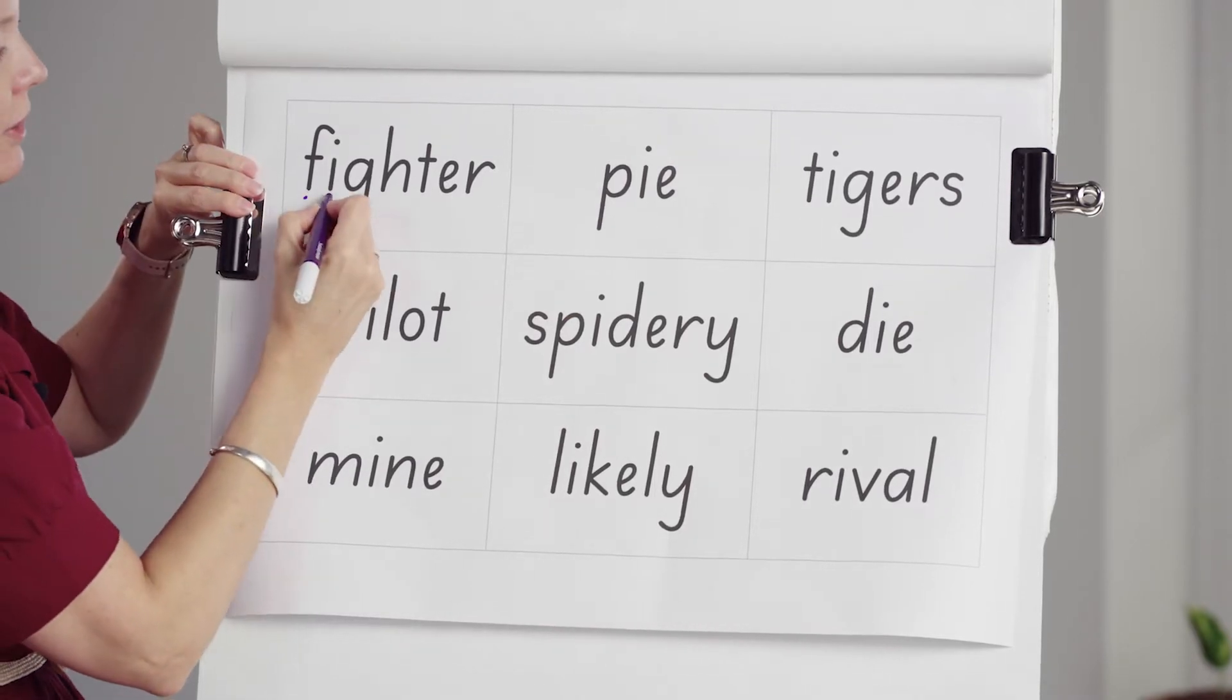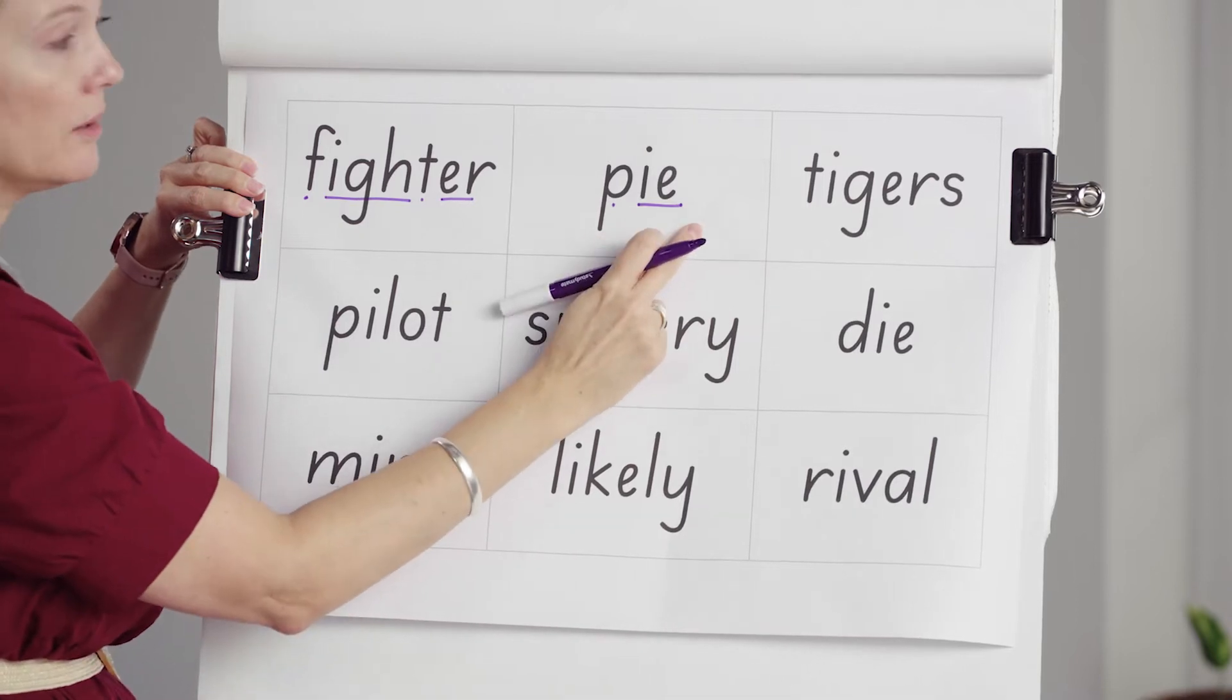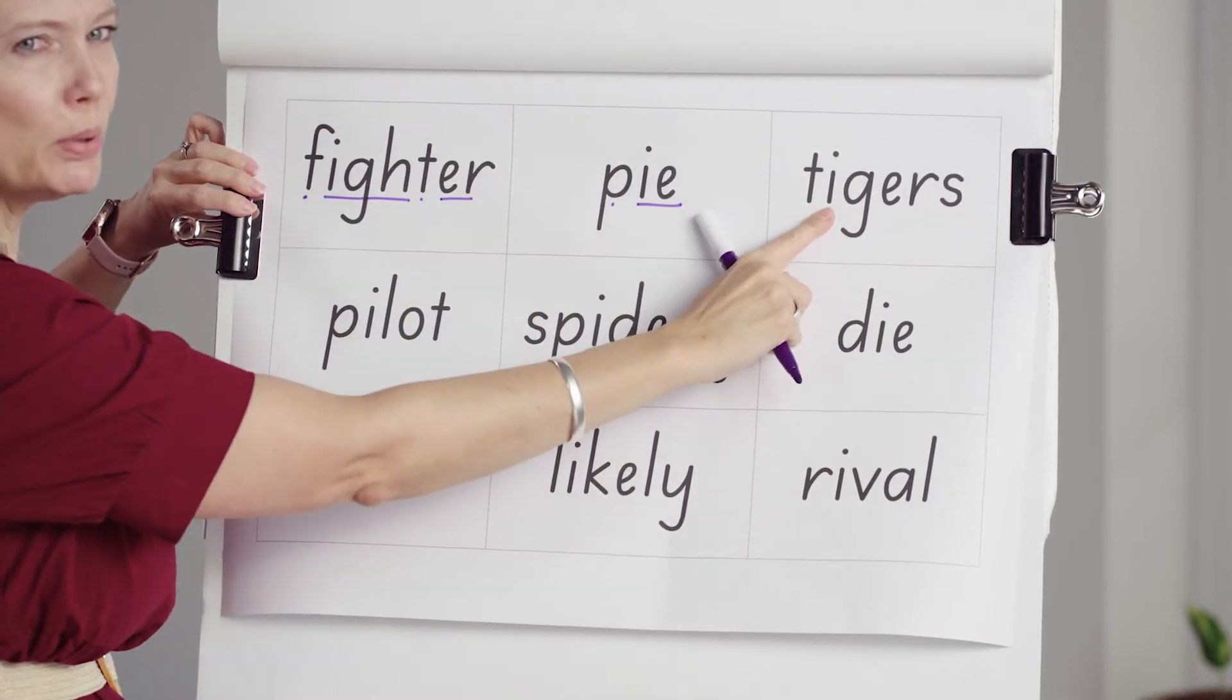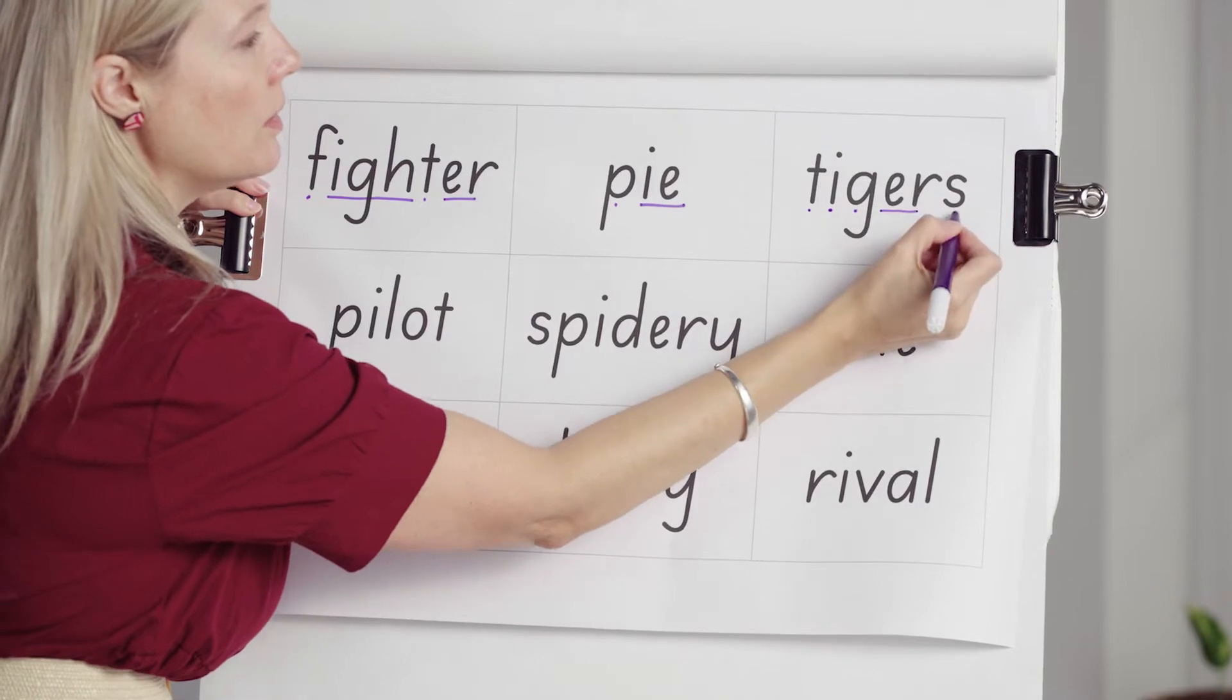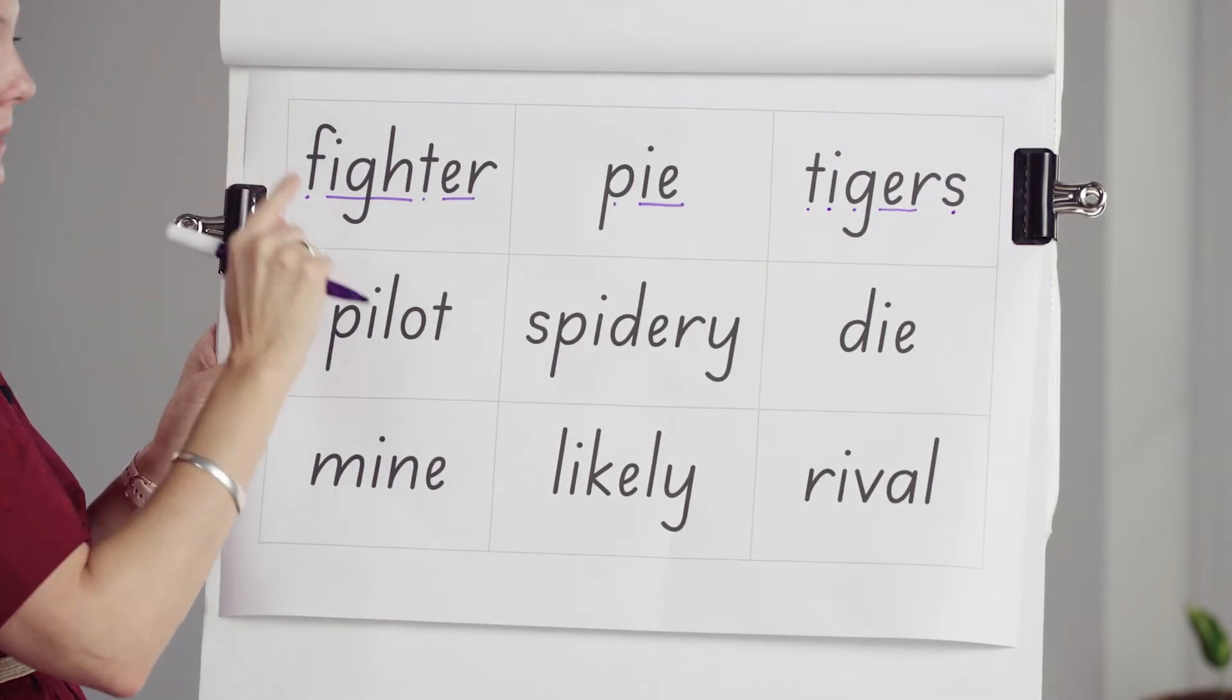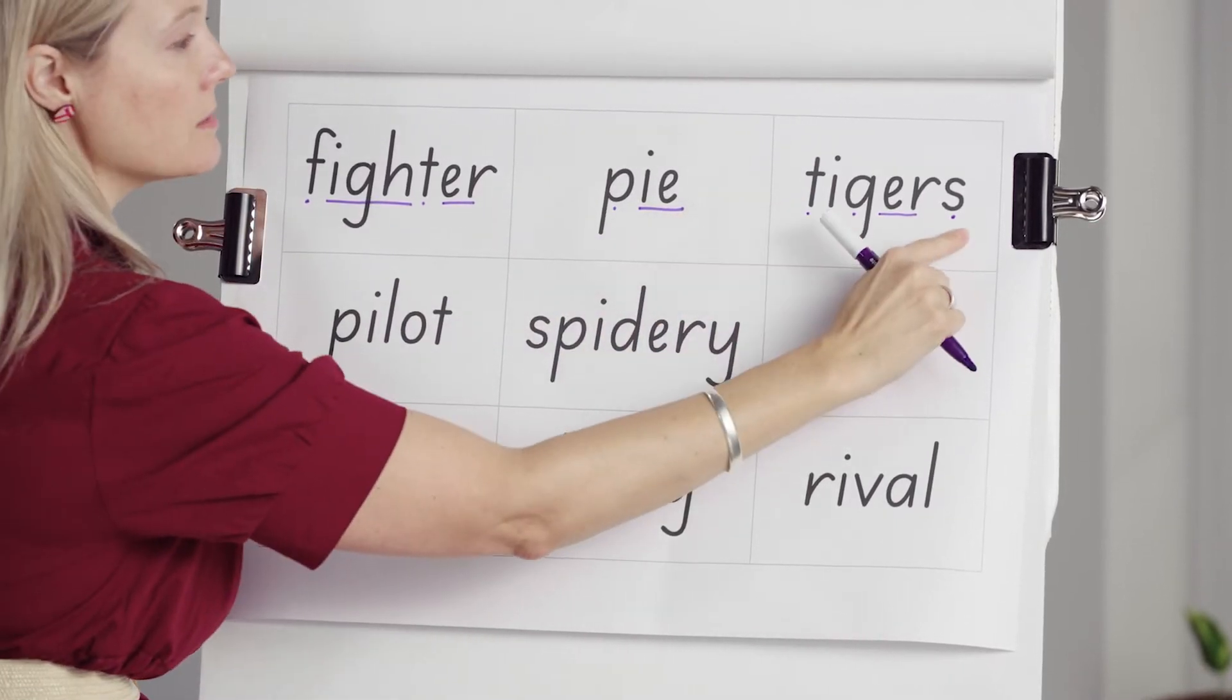F-i-t-e-r. Fighter. P-i-l-o-t. Looks like two vowel sounds here. So I'm going to try this as the open syllable i first. T-i-g-e-r-s. Tigers. I think that sounds good. Ready to read them a little bit quickly? Fighter. Pilot. Tigers. Excellent.